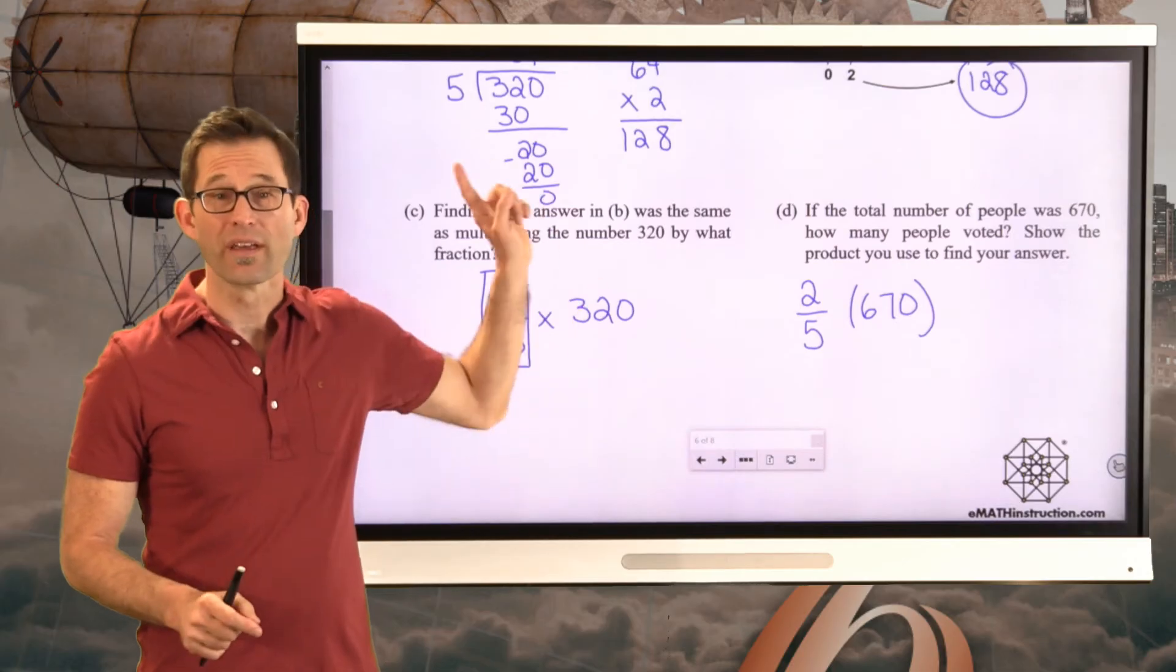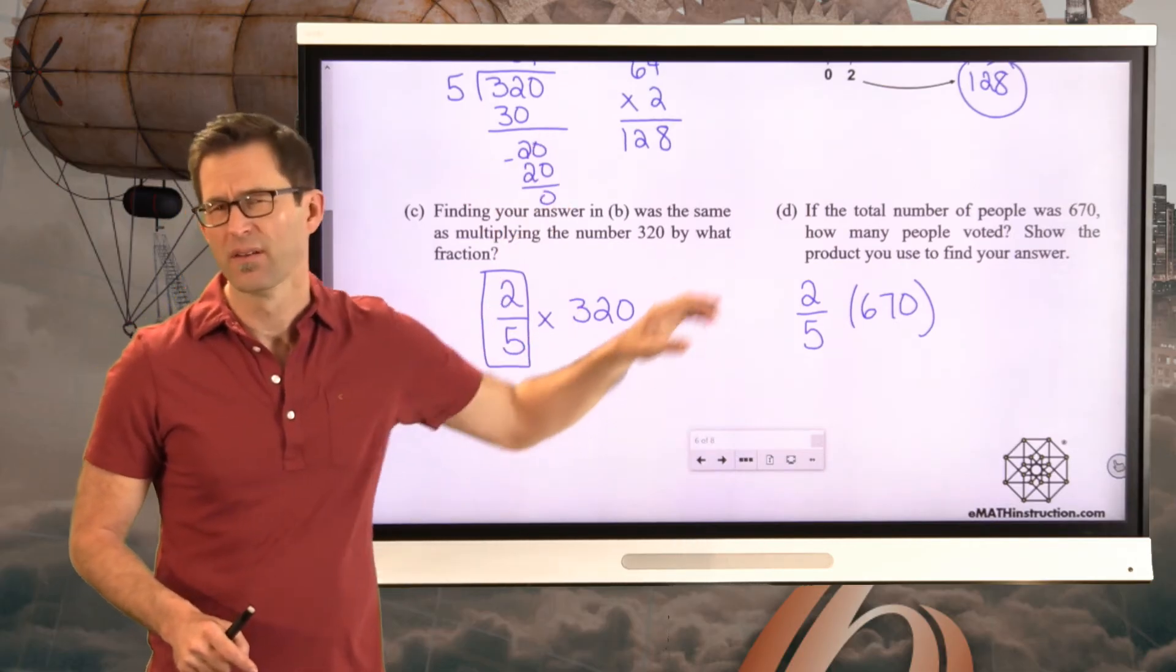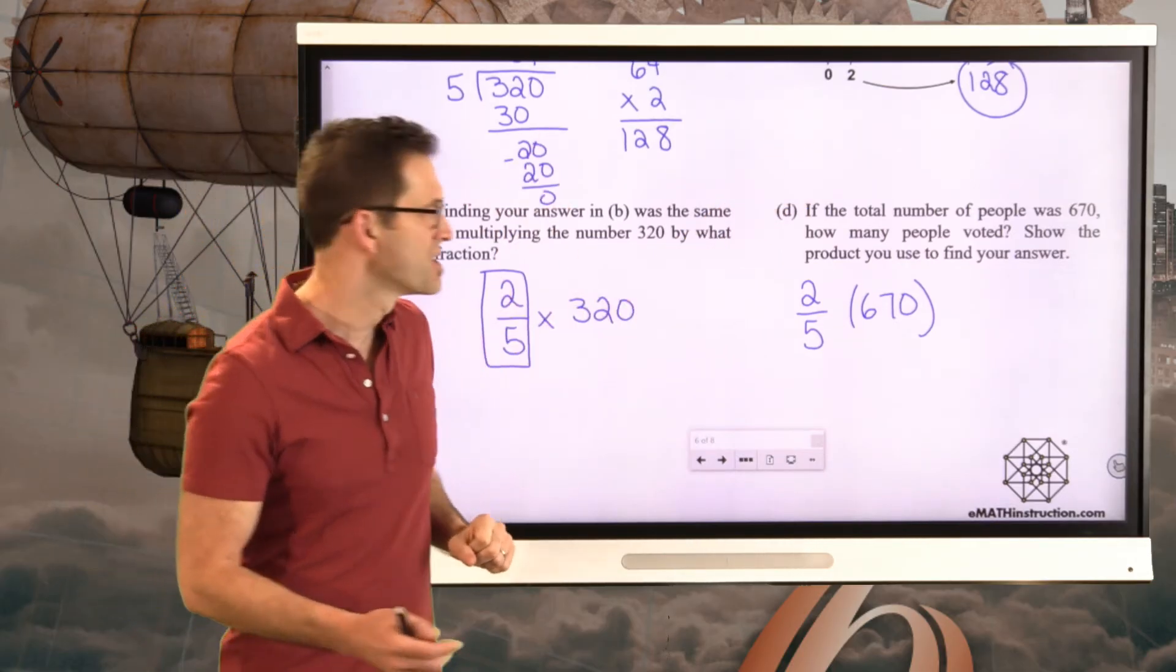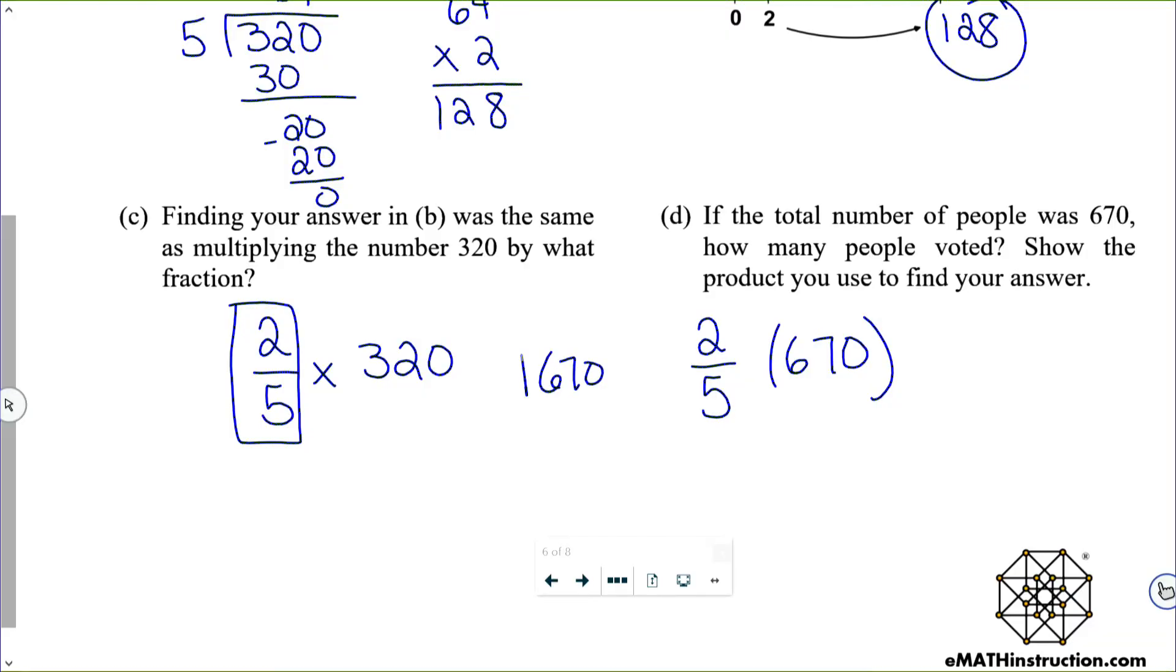So if I've got 670 people and I want to know how many people voted, then I can just multiply by the fraction two-fifths. Now don't get me wrong. The work is literally exactly the same that we did up in letter B. Which is that I still have to do 670 divided by five. Let's see what we get there. One, five, 17, three, 15, 20, four, 20.